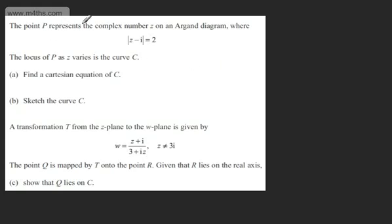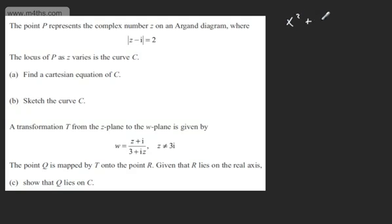In this question, we're told the point P represents a complex number z on an Argand diagram where the modulus of z minus i is equal to 2. We're told the locus of P as z varies is the curve C. In part A, we need to find a Cartesian equation of C. This gives us a circle with center (0, 1) and radius 2. So in Cartesian form, x squared plus y minus 1 all squared is equal to r squared, and radius squared — 2 squared — gives us 4.